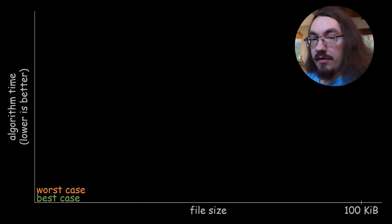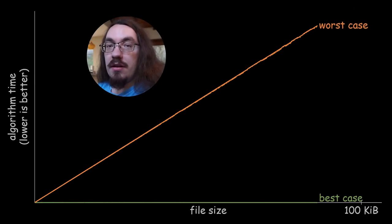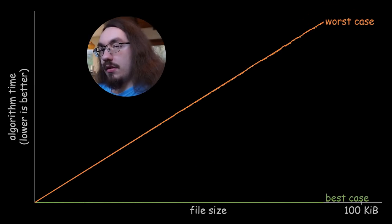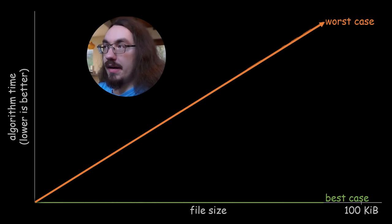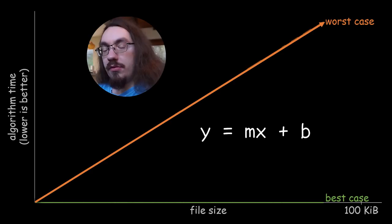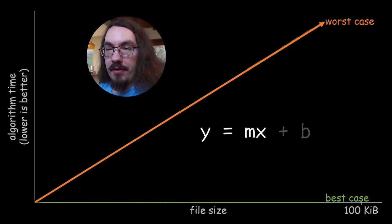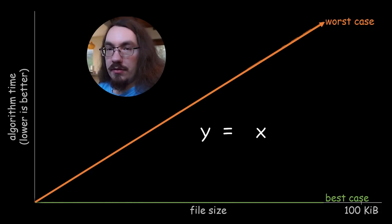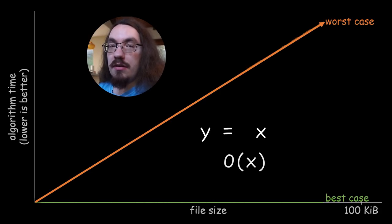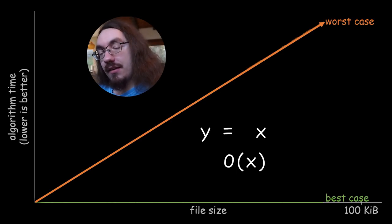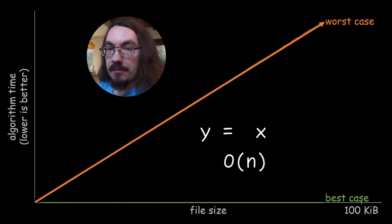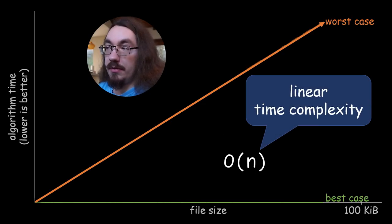Let's measure the worst case, where the error is at the end of the file. In the worst case, our algorithm takes longer. Notice that the worst case line is pretty much a straight line. You can write an equation for a line using y = mx + b. Here, x is the file size, y is how long the algorithm takes, m represents the slope, and b represents some constant. When we talk about big O notation, we care about the shape of this chart, not the specific numbers. Therefore, we drop the constant factor and the slope, ending up with y = x, which we write as O(x), or using the standard term, O(n). O(n) is linear time complexity — linear because it makes a straight line.